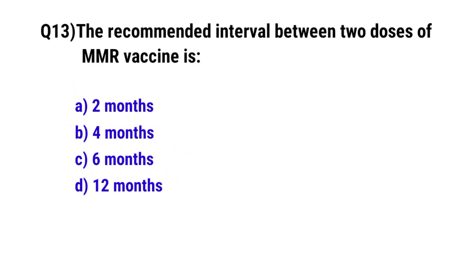Question No. 13. The recommended interval between two doses of the MMR vaccine is? The correct option is D. 12 months.